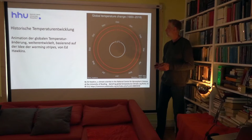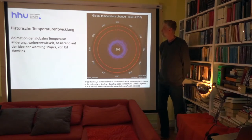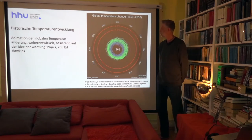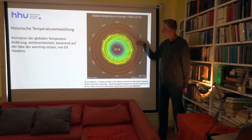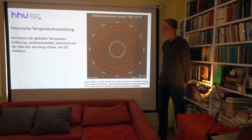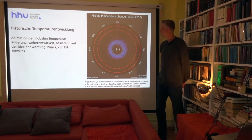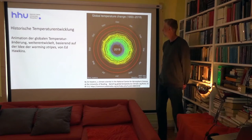Ed Hawkins hat dann noch die Climate Spirals eingeführt, also die Klimaspiralen. Was wir hier sehen, ist die Änderung der globalen Durchschnittstemperatur zwischen 1850 und 2018. Die Spirale bildet sich im Laufe eines Jahres. Wir fangen mit sehr blauen Werten an, also unterhalb der Mitteltemperatur, und dann erreichen wir in den 40er, 50er, 60er Jahren die Durchschnittstemperaturen. Dann haben wir die positiven Abweichungen, und wir erreichen heute ungefähr den Ring, der die 1,5 Grad Celsius markiert.